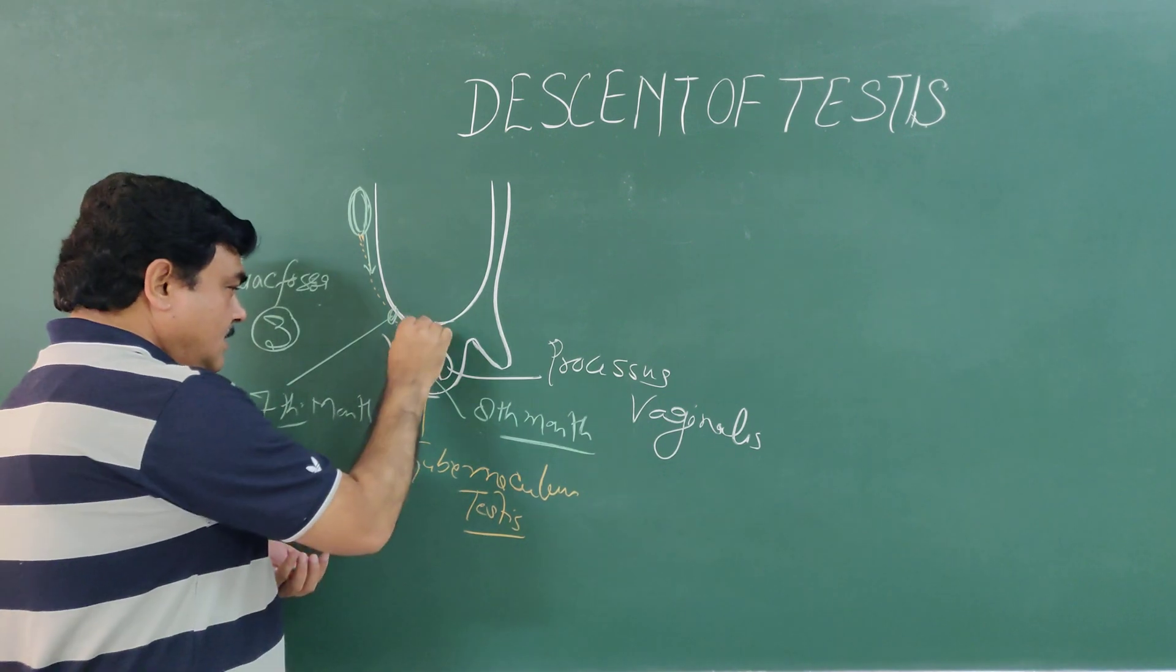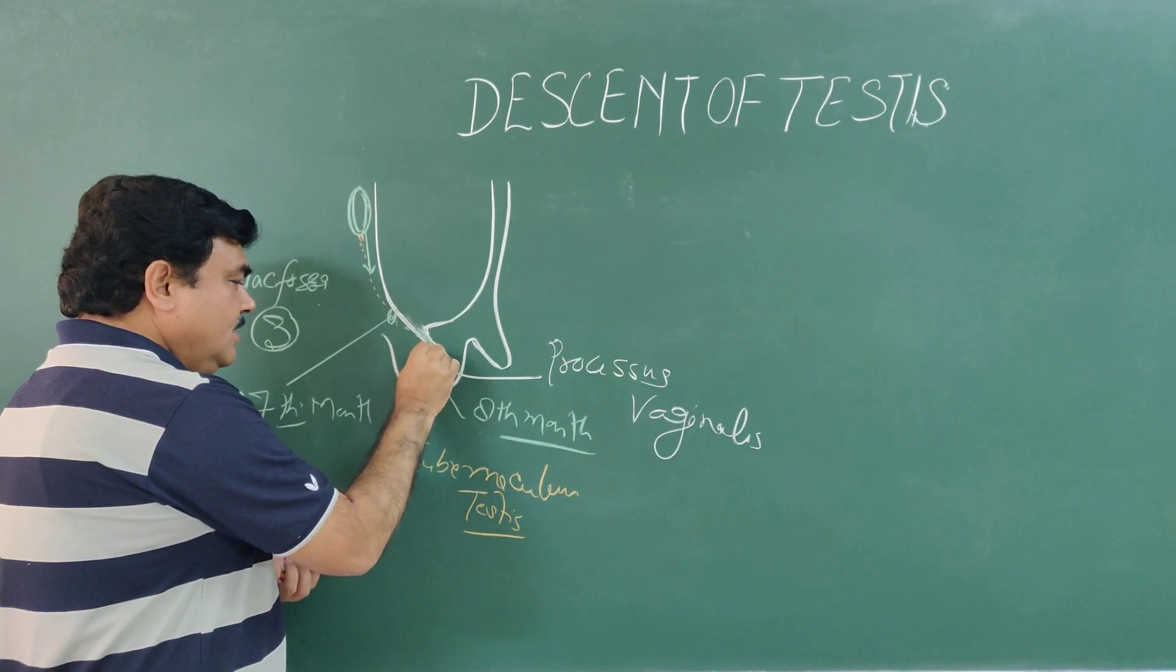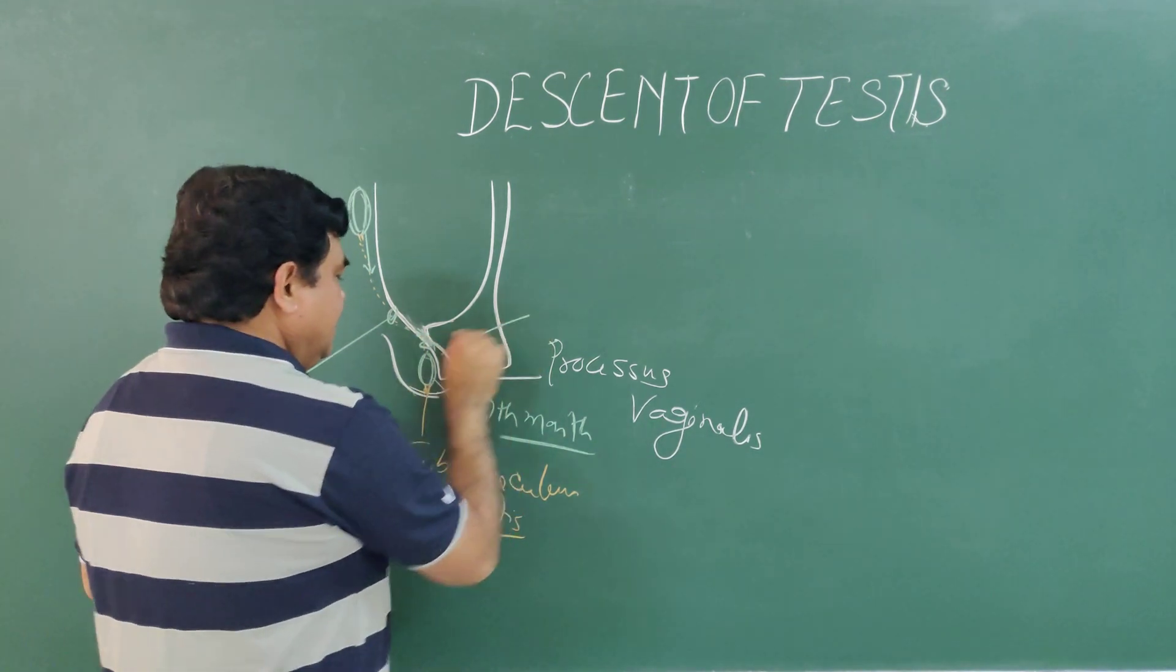This processus vaginalis connects with the abdominal cavity, and now it becomes tunica vaginalis.